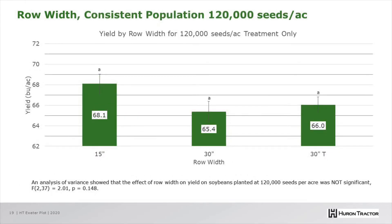Eliminating the effect of population — there was a 120,000 seeds per acre treatment across all three row widths. Left column is 15-inch rows, center is 30-inch rows, and right is 30-inch twin rows. When we take into account a consistent population, we no longer see a statistically significant yield benefit to the 15-inch rows.